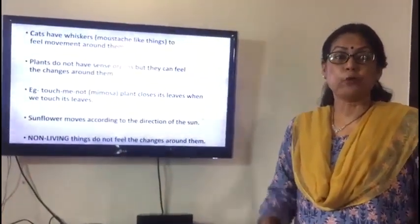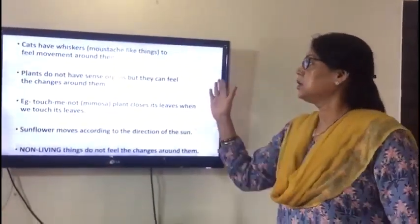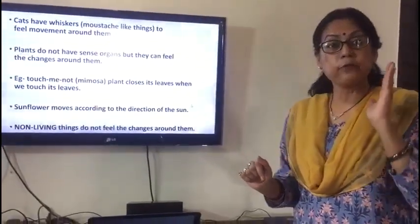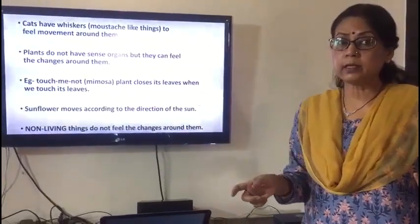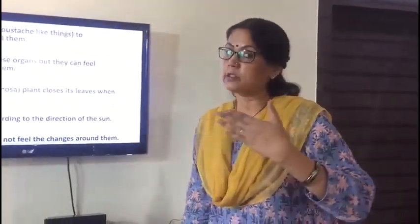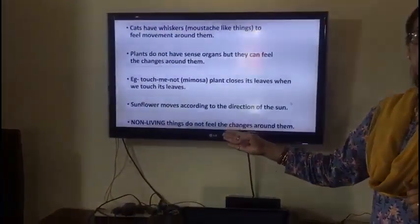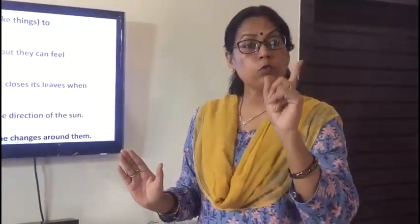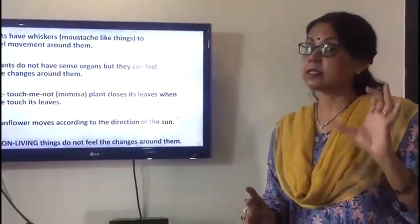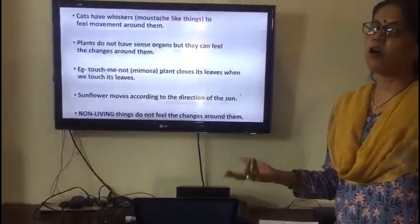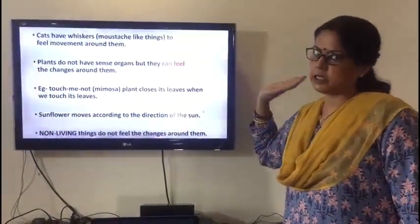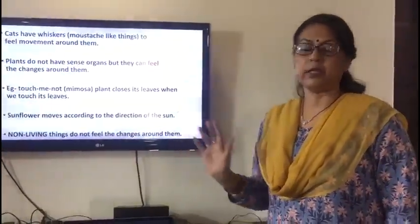Cats have whiskers to feel movement around them. Plants do not have sense organs but they can feel changes around them. For example, the touch-me-not or mimosa plant closes its leaves when you touch them. The sunflower moves its face according to the direction of the sun. Non-living things, like a TV, do not feel any changes around them.